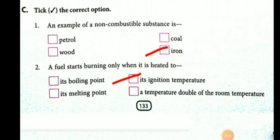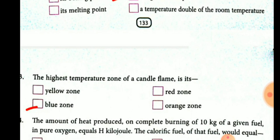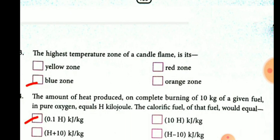Now, tick the correct option: An example of a non-combustible substance — something which cannot combust or be burnt — is iron. A fuel starts burning only when it is heated to its ignition temperature. The highest temperature zone of a candle flame is the blue zone.